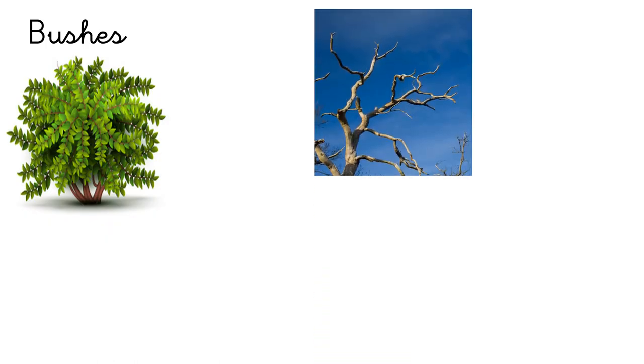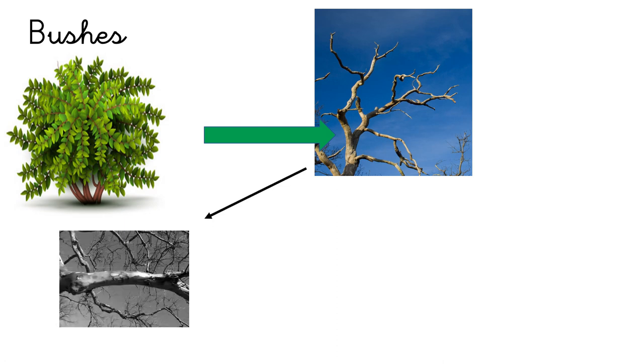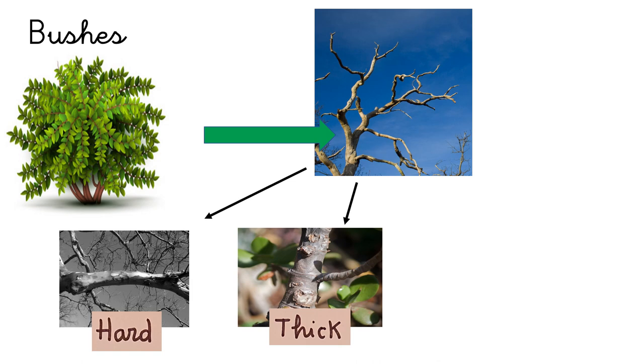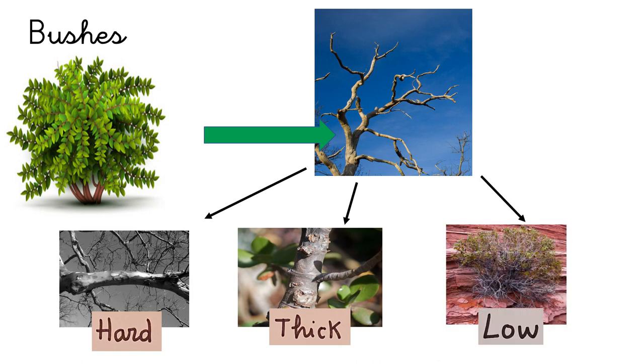Bushes. Bushes have got woody branches, and the branches are hard and thick. The branches, as well, are low branches. It means that the branches are very close to the ground.